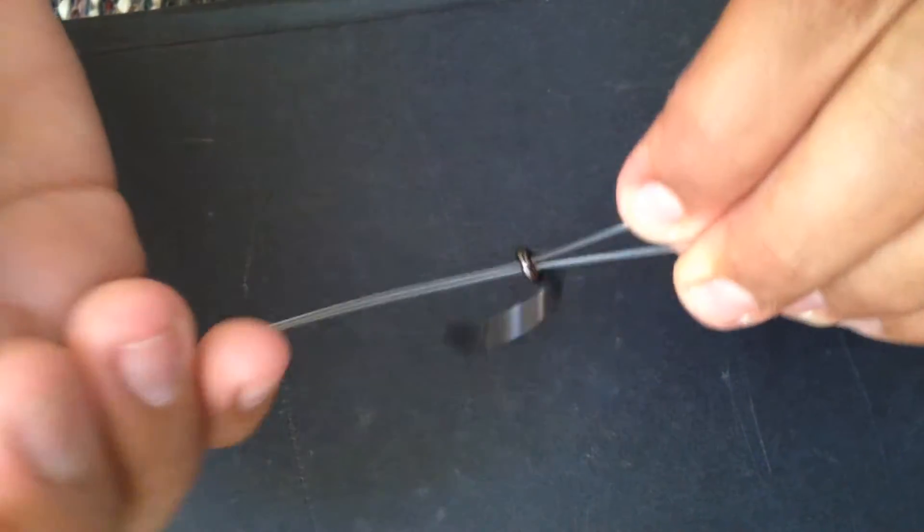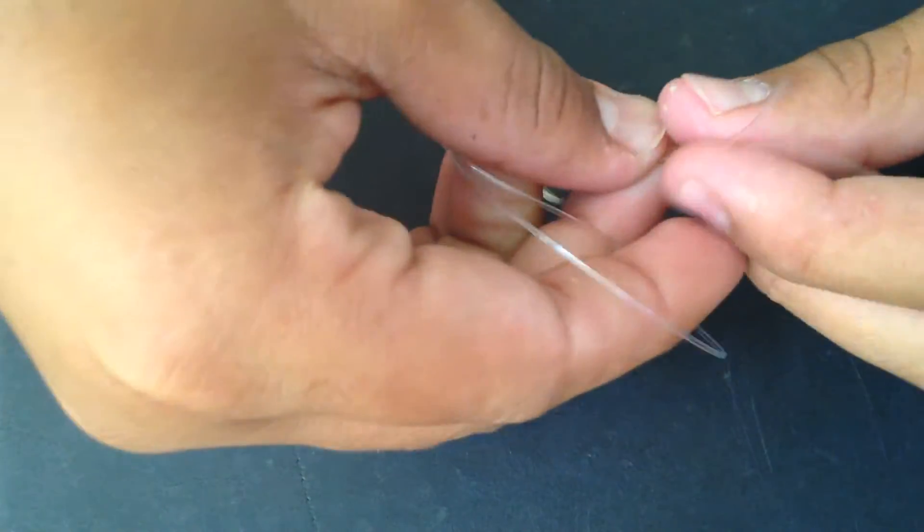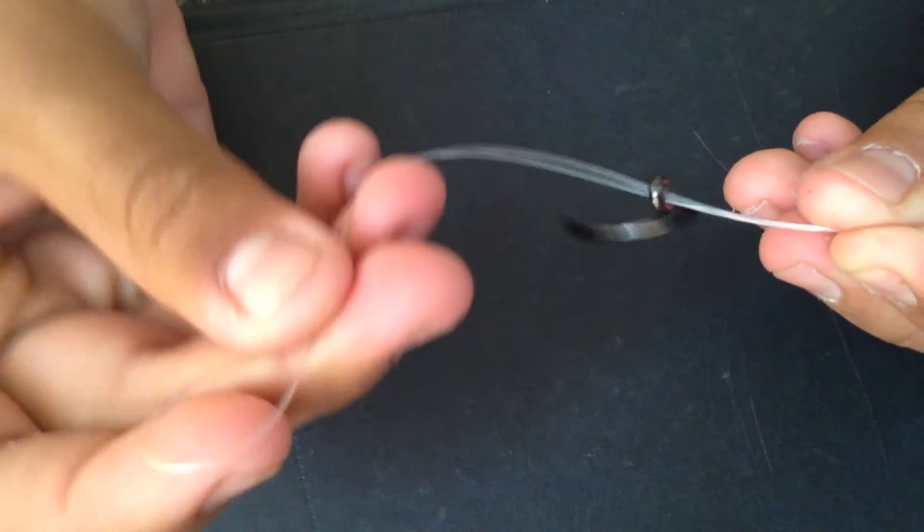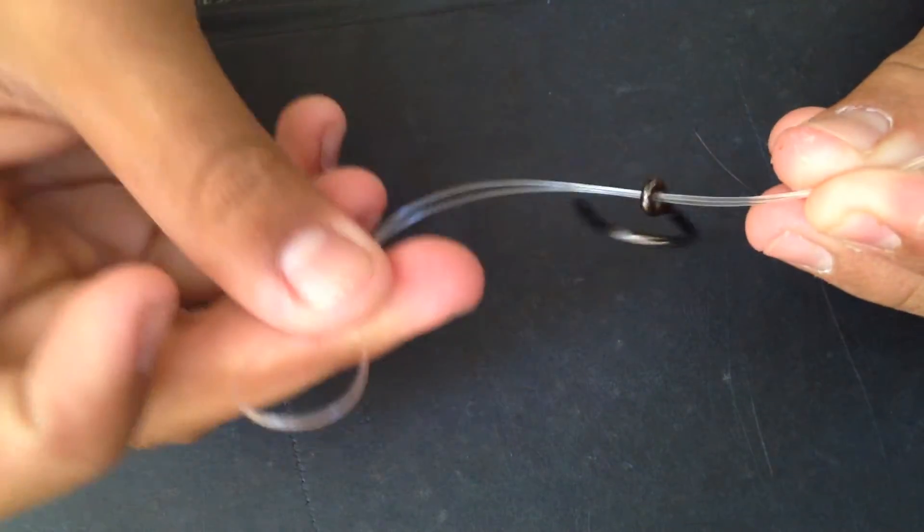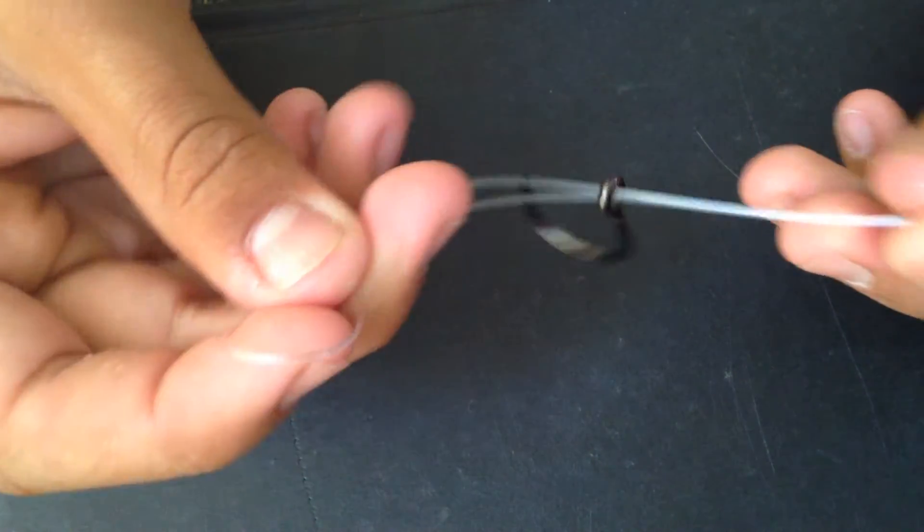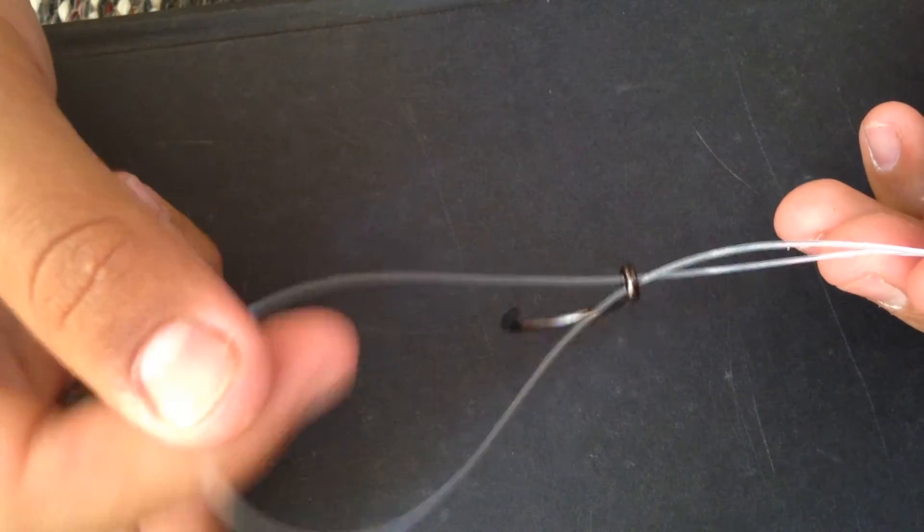Okay. Now that you have this loop, you keep it in your dominant hand. This is going to make it much easier. For me, my dominant hand is my right hand, so I've got the loop in my right hand, as you can see.